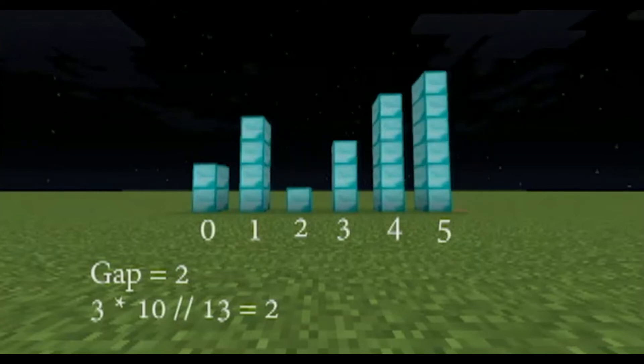Now the gap shrinks to 2 because 3 times 10 divided by 13 floor is 2.